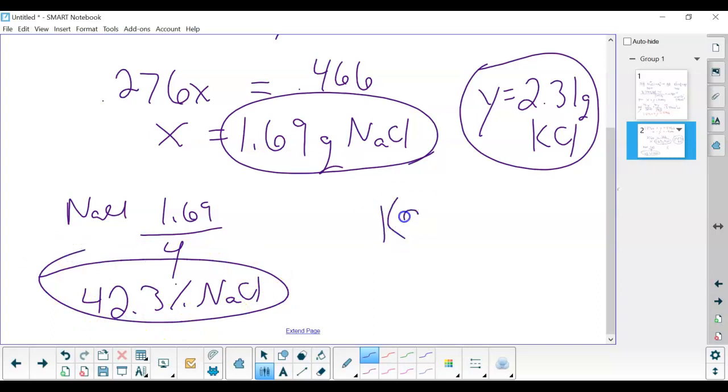And then our potassium chloride is 2.31 over 4, which gives us 57.7 percent. Now my decimals might be a little bit off, but that's the basic approach to how you want to solve this problem.